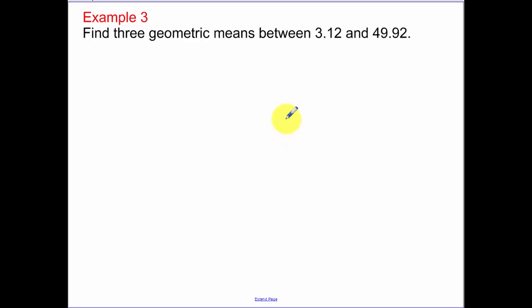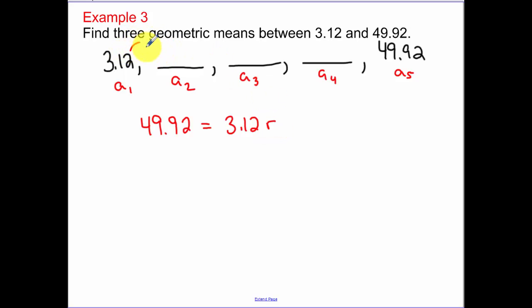Find 3 geometric means between 3.12 and 49.92. So what that means is, 3.12, I have 3 blanks, 1, 2, 3, and then I have 49.92. So think of this as your first term, second, third, fourth, fifth term. So the value of our fifth term, 49.92, is our initial term times the common ratio 1, 2, 3, 4, or n minus 5, I'm sorry, 1 minus 5 times. So when we divide that out, we get 16. And then we take everything to the 1 fourth power, and we get our common ratio is 2.